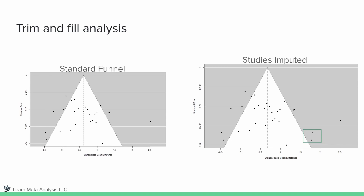Another thing I like about the trim and fill analysis is you can actually get a funnel plot for it. On the left is our original standard funnel plot, and on the right you can see two imputed studies highlighted in green with a green box around them. You can tell these are imputed because they are hollow in the center — they don't have a solid dot. I like this because the visual and statistical representations together help me better understand my data.